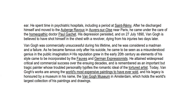Van Gogh was commercially unsuccessful during his lifetime and was considered a madman and a failure — pretty stiff reputations. How did he become one of the most recognized and famous artists of all time? He became famous only after his suicide, and he came to be seen as a misunderstood genius in the public imagination.